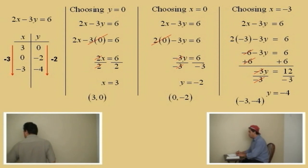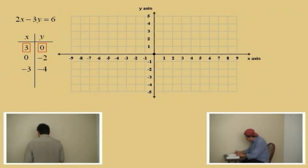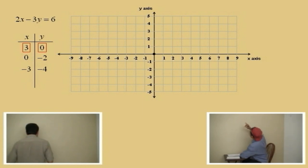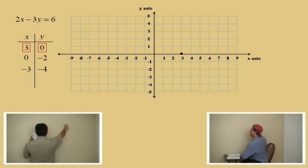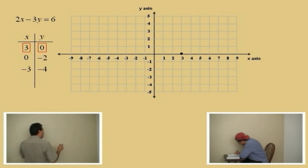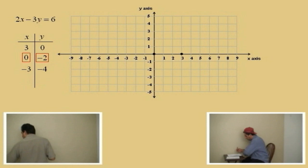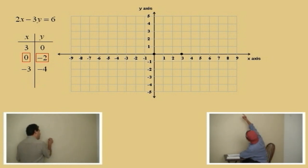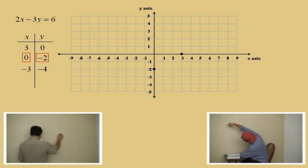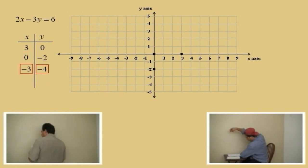Let's go ahead and bring our grid and start plotting some points. Let's plot the point 3, 0 first. Remember, we start at the origin. We move to the right because x equals 3 — to the right 3. Very nice. And do we have to move up or down for y? No, because y was 0. So, let's go to our next point: 0, negative 2. x is 0, so we start at the origin. We don't have to move horizontally because x was 0. We simply move down 2. Very good. So, there it is right there.